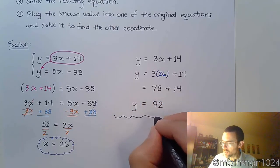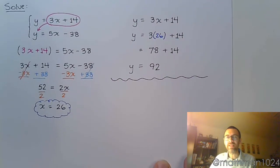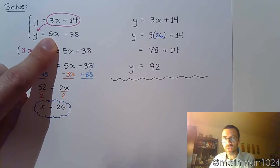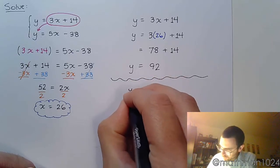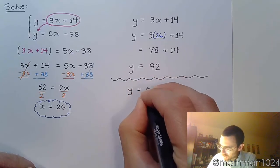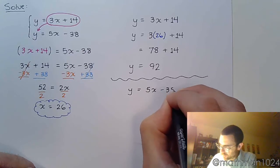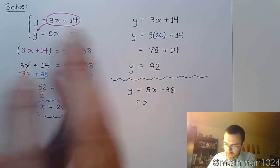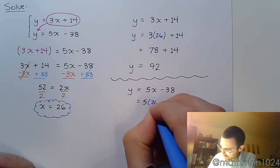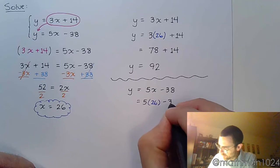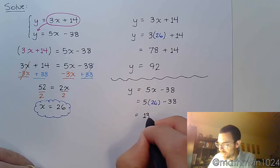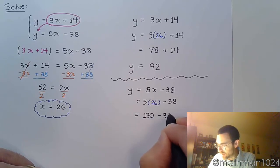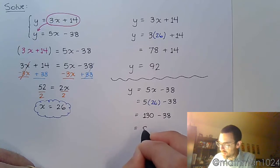Now to ensure that we have the right answer, we can take 26 and plug it into the other equation just to verify that we still get 92. If we get something other than 92, then we know that we've done something wrong. Y is equal to 5x minus 38, and we said that x was equal to 26. So plug this in. Multiply 5 times 26, you get 130. And 130 minus 38 is 92.